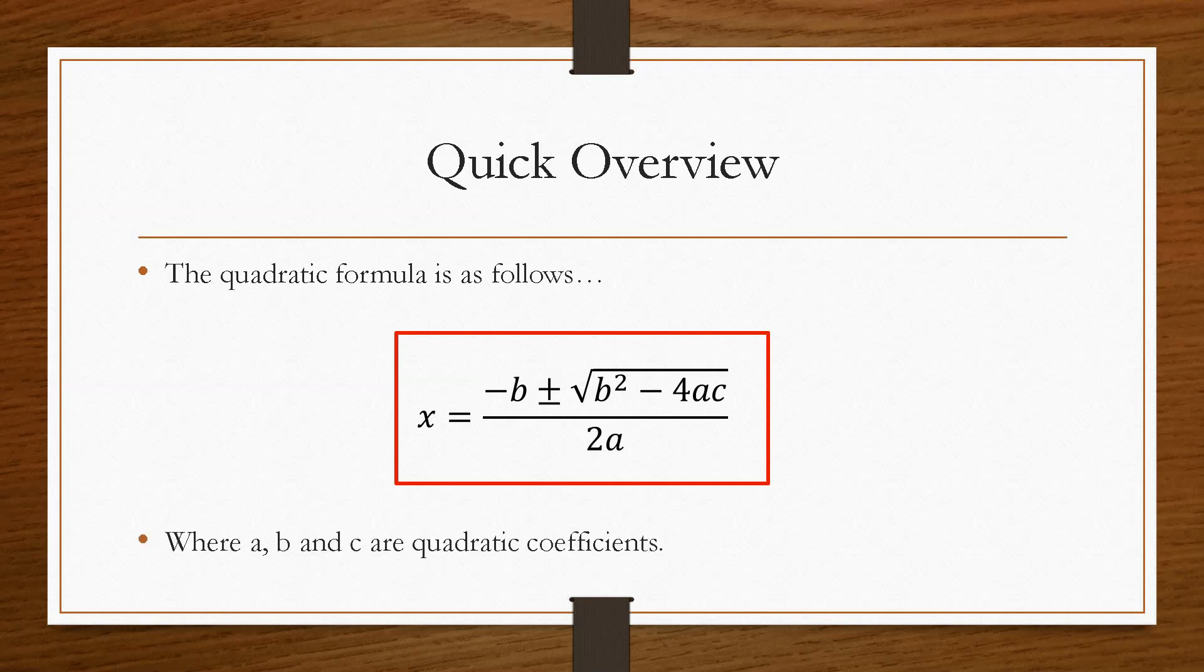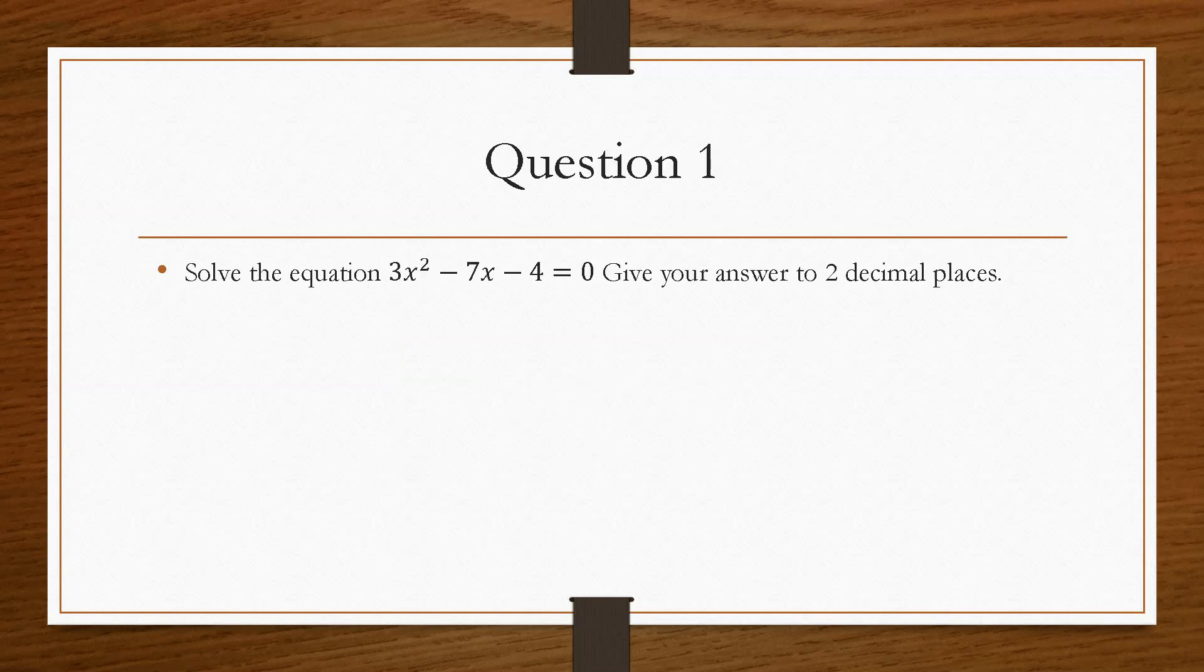Now the values of A, B and C are what we would call quadratic coefficients. And we get these from the equation that we will be given at the start of the problem. So the best way of doing this is just to have a look at a quick example.